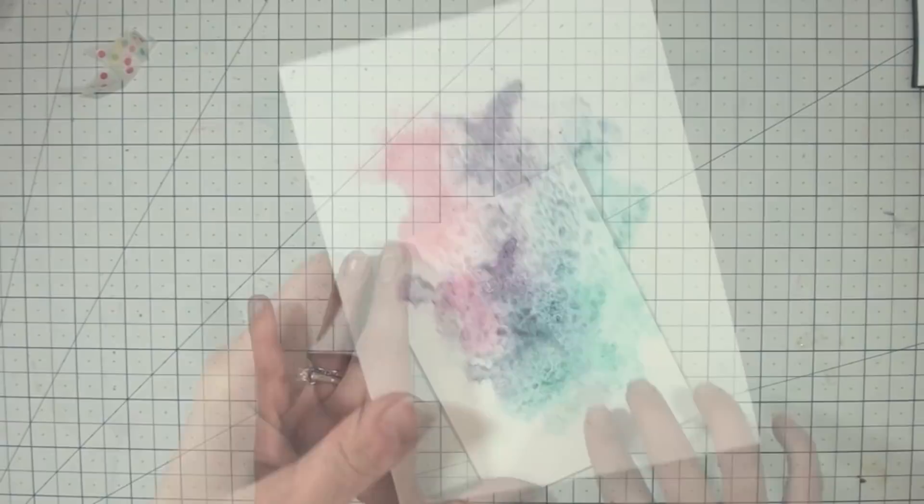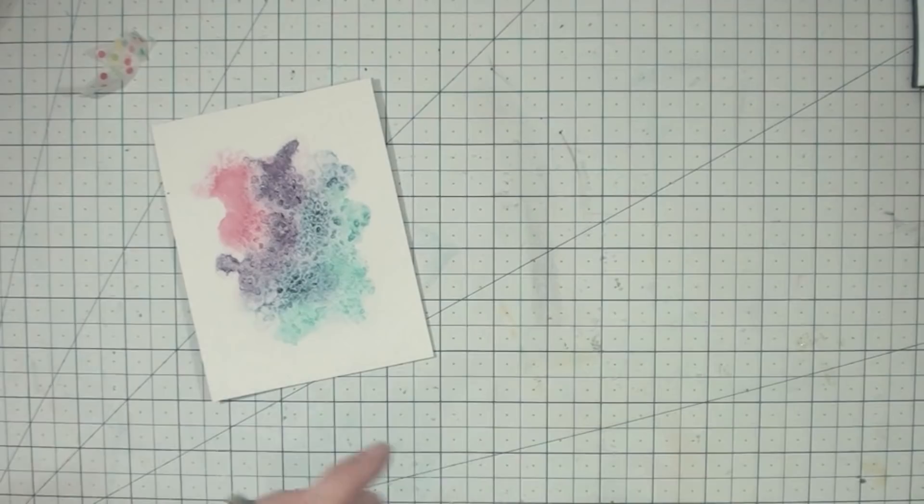So once you're done, then you can just go ahead and brush the salt off of your paper and it'll come right off. And there you can see that background and how it's textured and really cool.